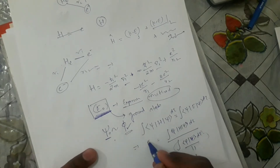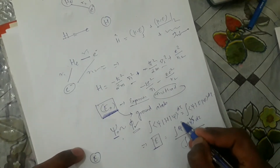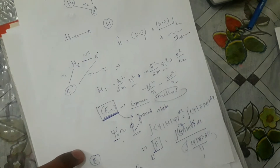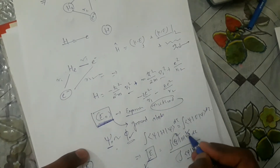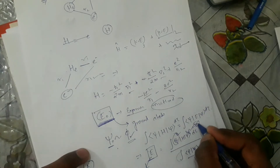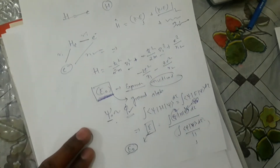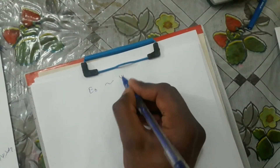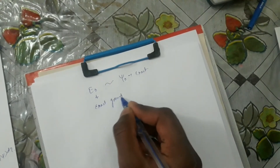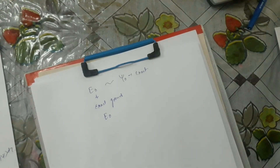We can calculate this energy mathematically. For an ideal system, there will be an exact wave function — let us suppose Ψ₀ is the exact wave function with corresponding energy E₀. For this exact case, E₀ is the exact ground state energy, and Ψ₀ is the exact ground state wave function.